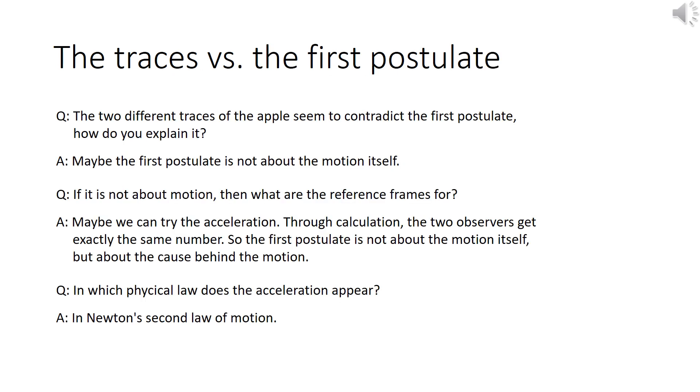Now, let's analyze our traces with the first postulate. Question number one: the two different traces of the apple seem to contradict the first postulate. How do we explain it? Well, the answer could be that maybe the first postulate is not about the motion itself.